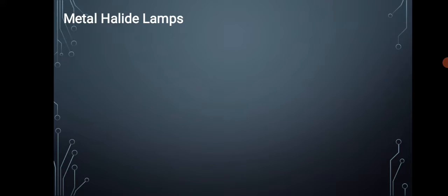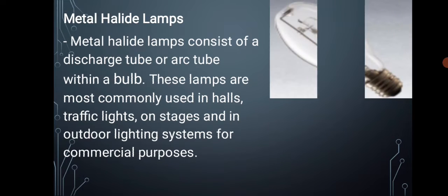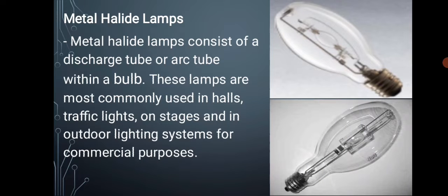Number four is metal halide lamps. Metal halide lamps consist of a discharge tube or arc tube within a bulb. These lamps are commonly used in halls, traffic lights, on stages, or in an outdoor lighting system for commercial purposes. The tube of metal halide lamps can be made from either ceramic or quartz, and contains mercury, metal halide salts, and starting gas. Metal halide lamps produce a great amount of light for their size, and these lamps are one of the most efficient lamps.